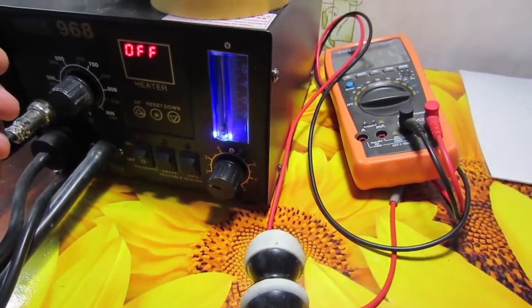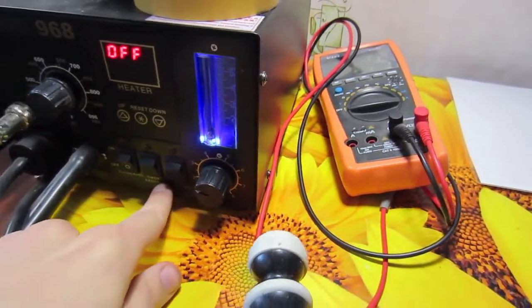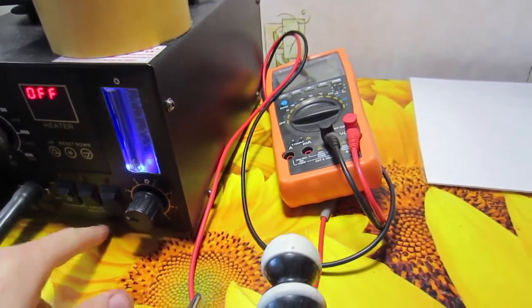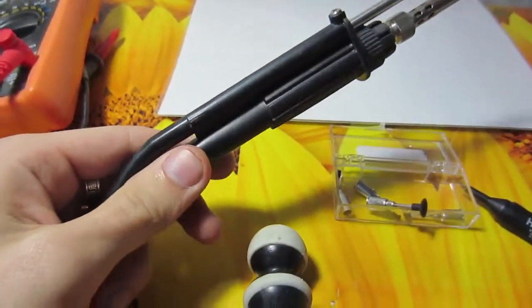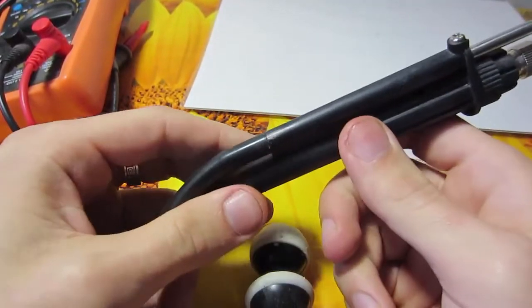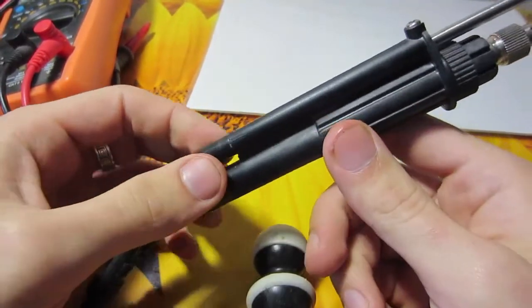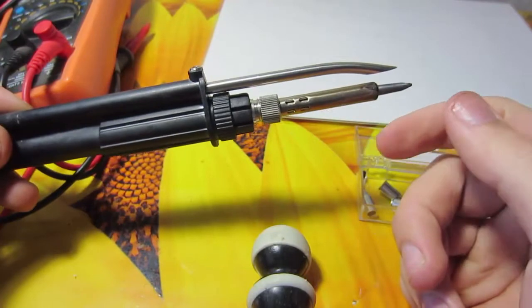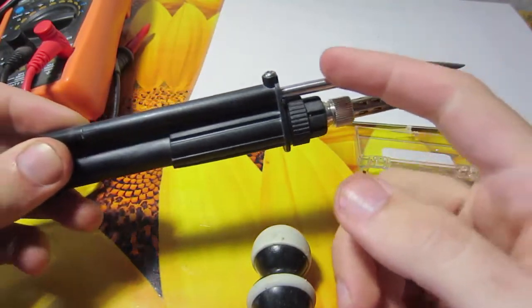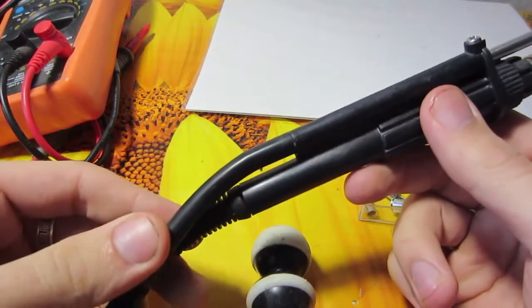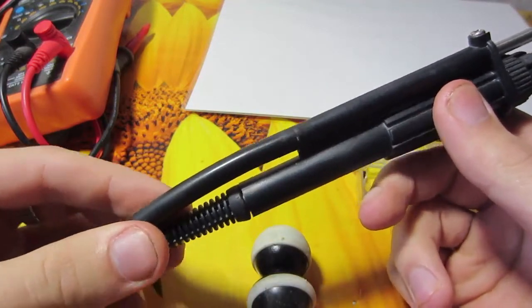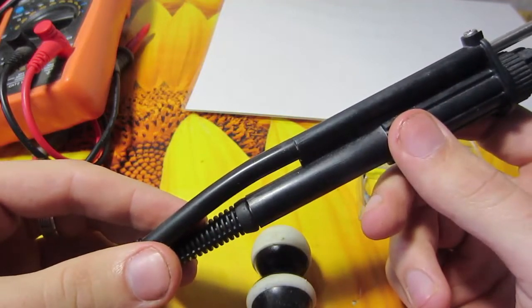have soldering stations with smoke absorber option. What does it mean? The station itself has some kind of compressor inside, and this compressor is sucking in fumes through this pipe by creating vacuum inside of it. So we can use this